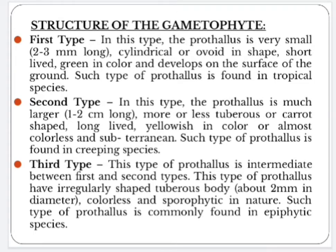Depending upon their nature, the prothallus of Lycopodium is of three types. The first type of prothallus is very small — 2 to 3 mm long, cylindrical or ovoid in shape, short-lived, green in color, and develops on the surface of the ground. Such type of prothallus is found in tropical species.